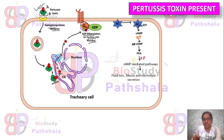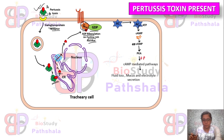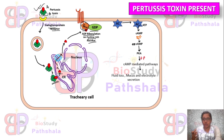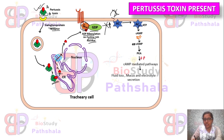This binding causes ADP ribosylation, which mainly occurs on the cysteine-rich residue of the Gi alpha subunit. The ADP ribosylation occurs when the Gi alpha is in the GDP-bound state, that is its inactive state. This ADP ribosylation causes prolonged inactivation of the Gi alpha subunit, so it cannot inhibit adenylate cyclase, removing the inhibition from adenylate cyclase.